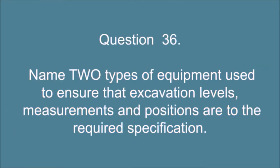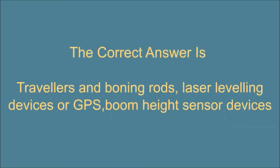Question 36. Name two types of equipment used to ensure that excavation levels, measurements, and positions are to the required specification. The correct answer is: travelers and boning rods, laser leveling devices or GPS boom height sensor devices.